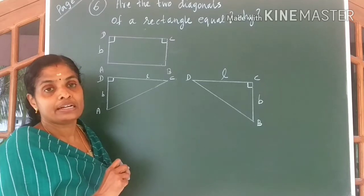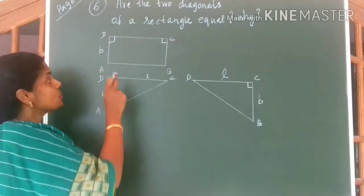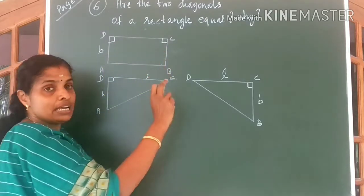What do you know about the angles in a rectangle? Each angle is equal to 90 degrees. So I have marked 90 degrees here, 90 degrees at C also.